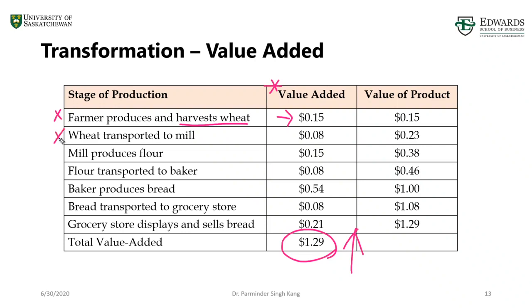Then wheat is transported — that activity has a certain cost, bringing the total to 23 cents per unit. Then the mill produces flour, costing 15 cents per unit, making the cumulative total 38 cents, and so on. Each activity adds value. The idea is to eliminate non-value-added activities or make value-added activities more efficient so they cost less while producing the same amount of product at the same quality.